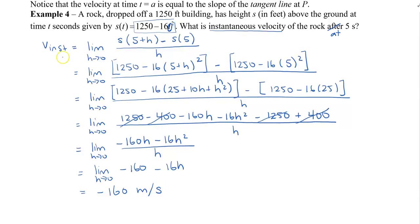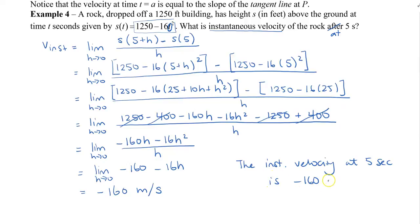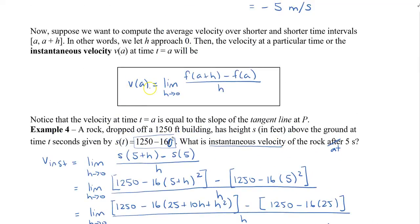So the instantaneous velocity at the 5-second mark is negative 160 feet per second. Going back to the general formula, we can label this as the instantaneous velocity, v instantaneous.